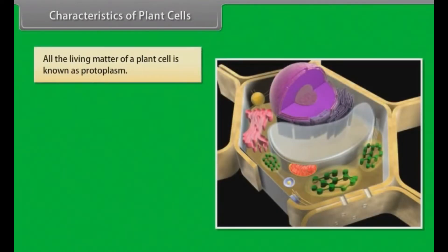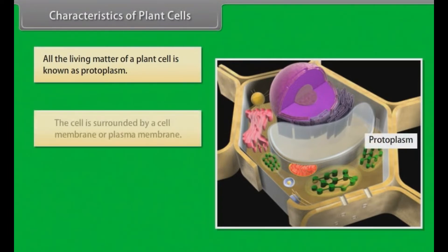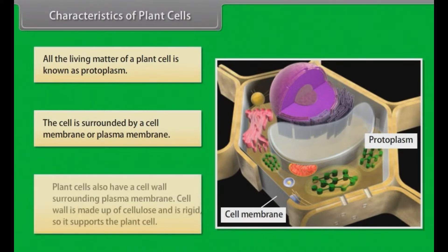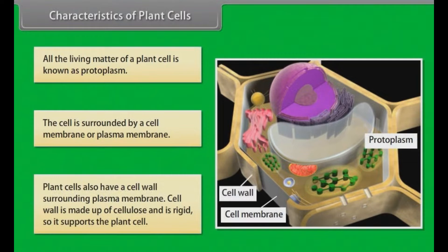All the living matter of a plant cell is known as protoplasm. This cell is surrounded by a cell membrane or plasma membrane. Plant cells also have a cell wall surrounding the plasma membrane. The cell wall is made up of cellulose and is rigid, so it supports the plant cell.